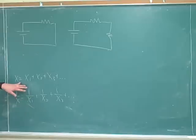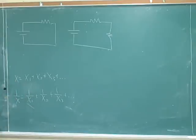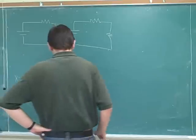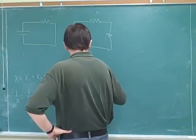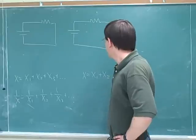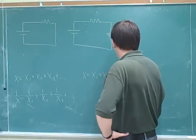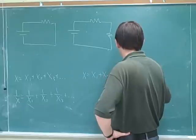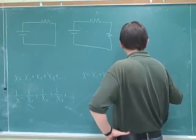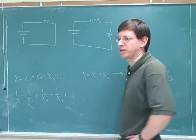Now we're going to start using equations that look like this, so we need to get some intuition for how these types of equations work. I'm using x to stand for a generic variable. Let's say we start by saying x equals x1 plus x2, and then we make a new equation where x equals x1 plus x2 plus x3 — so we've added in x3.